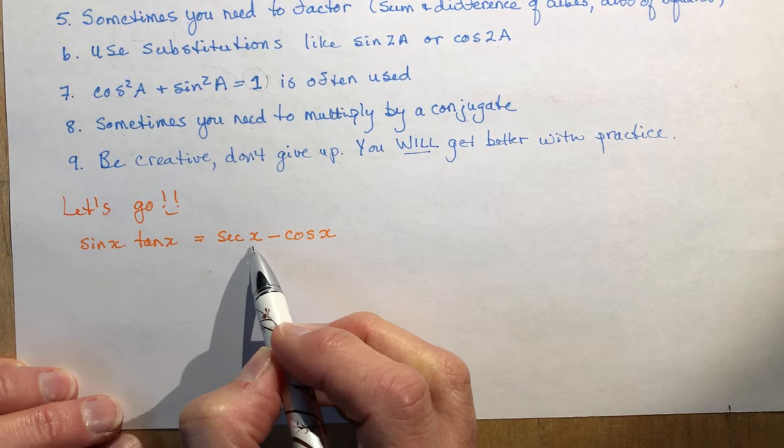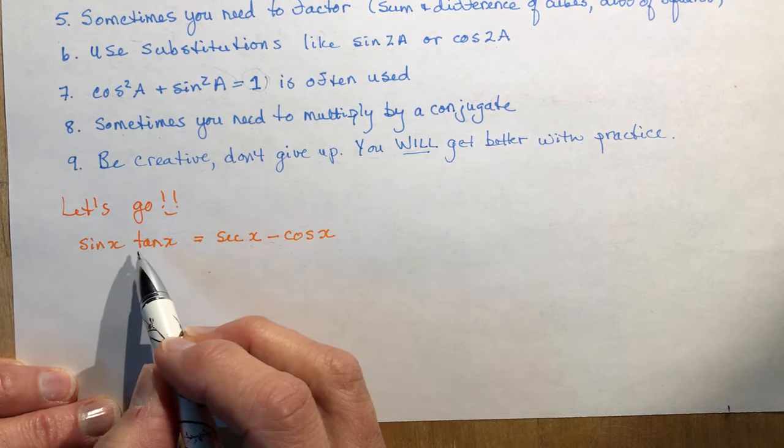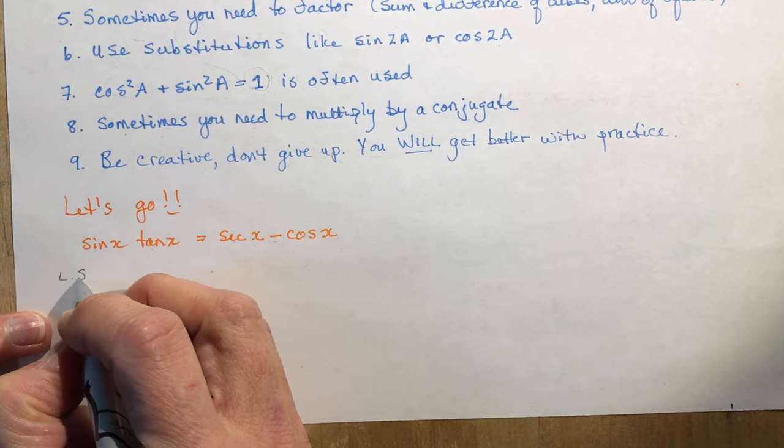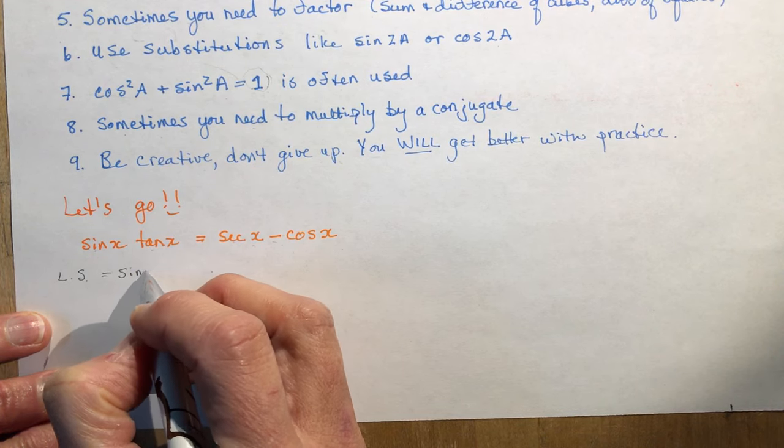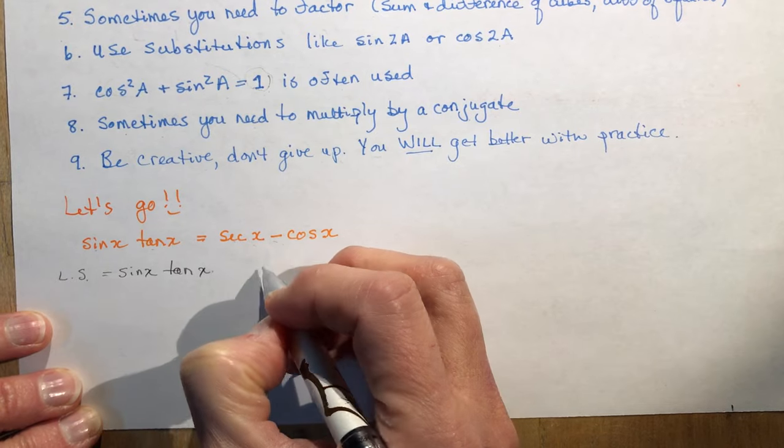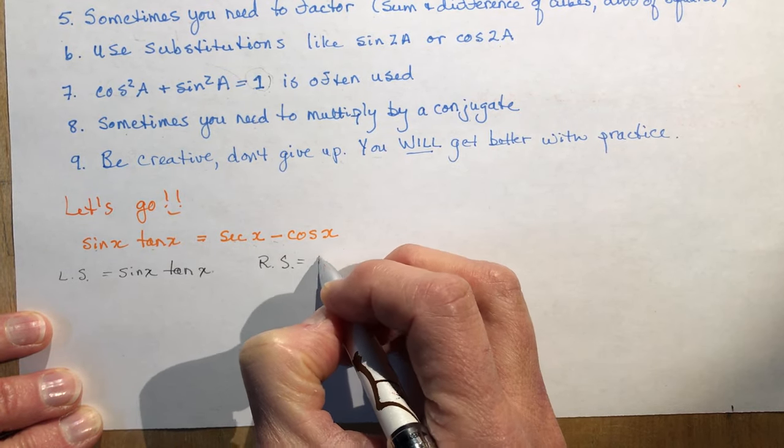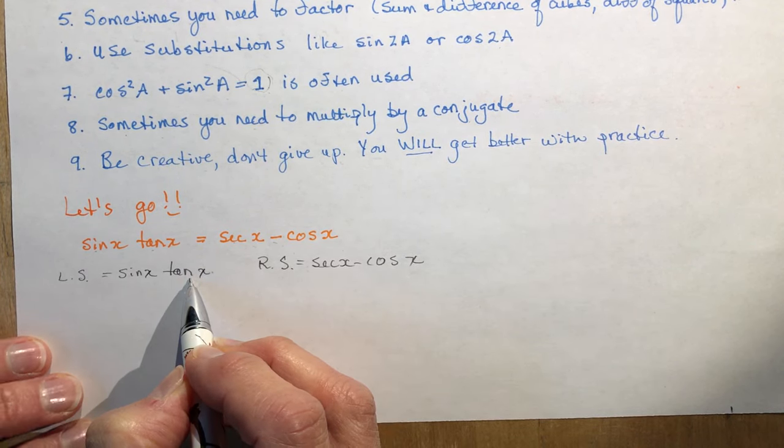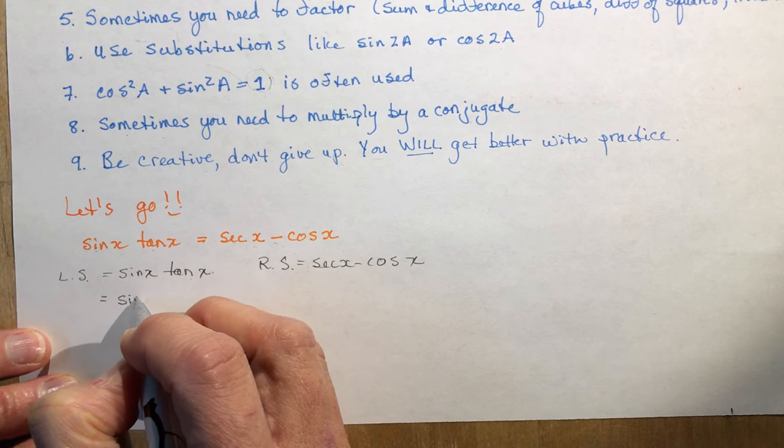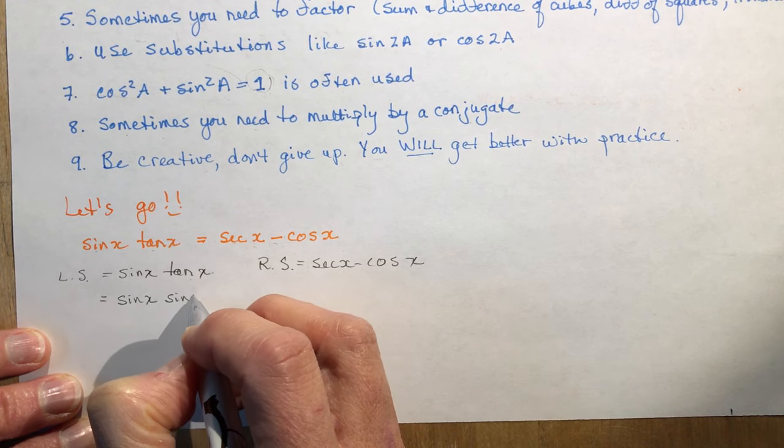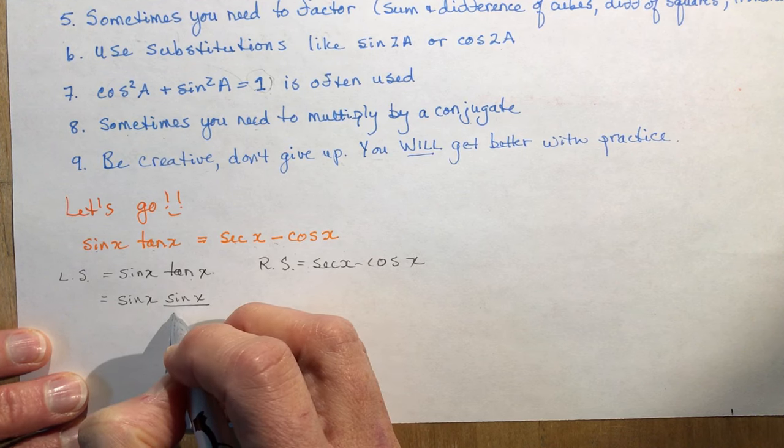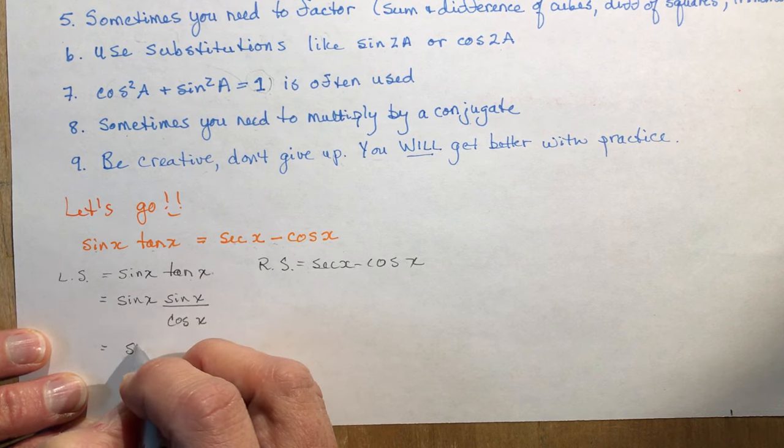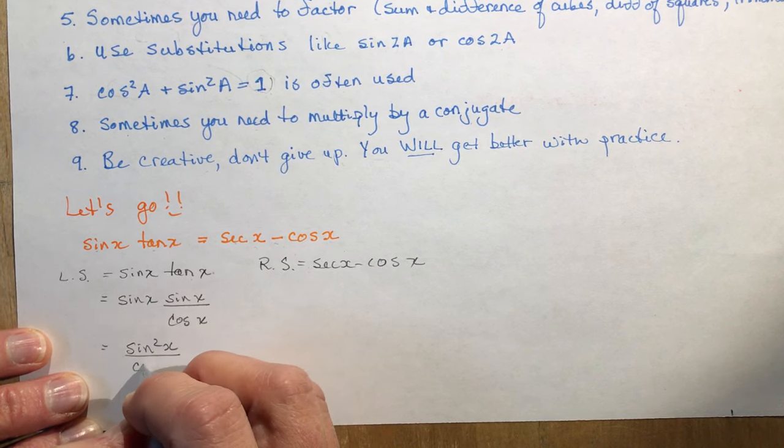So I have sin x tan x = sec x - cos x. Well, they both have something that I can break down. This one is all one part, this is two parts. So I'm thinking of those things as I do them. And don't forget to look from left to right as you're working with it to see what direction you should be going in. So I'm going to write what the left side is, what the right side is, and then I'm going to start simplifying. So I know that tan x is sin x over cos x. So I'm going to replace that. Always replace tan or a reciprocal function by the sine and cosine. So now I have sin x times sin x. Oh, that would just be sin²x, isn't it? Over cos x.